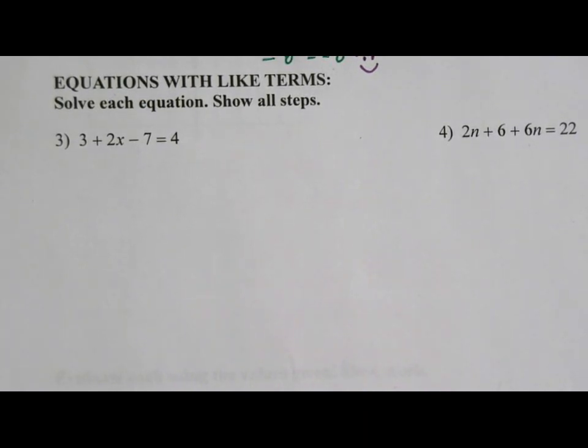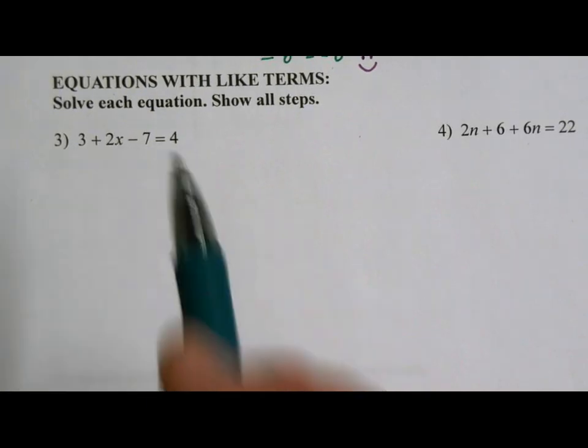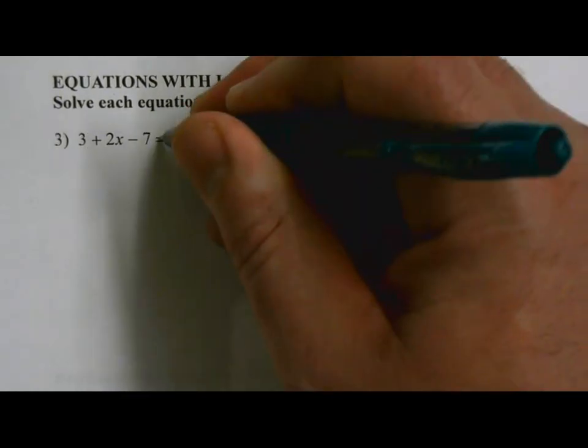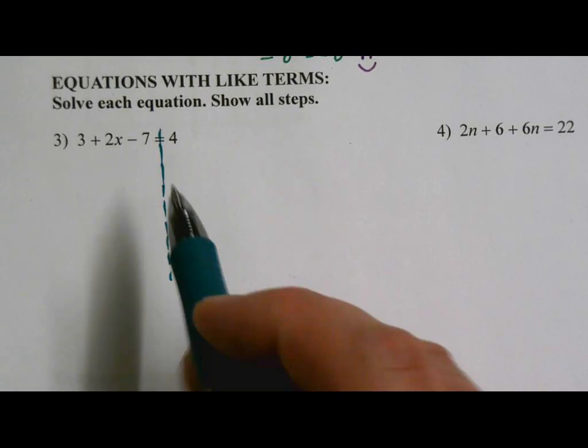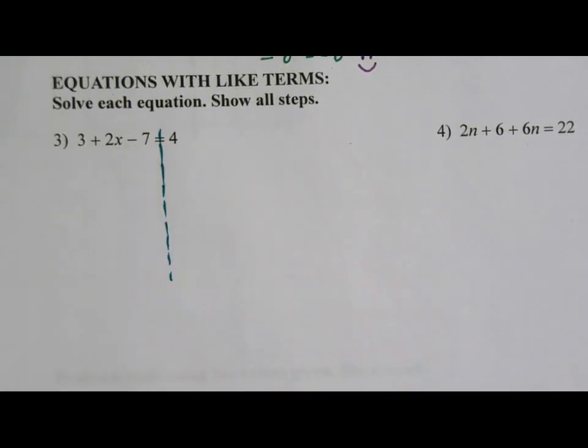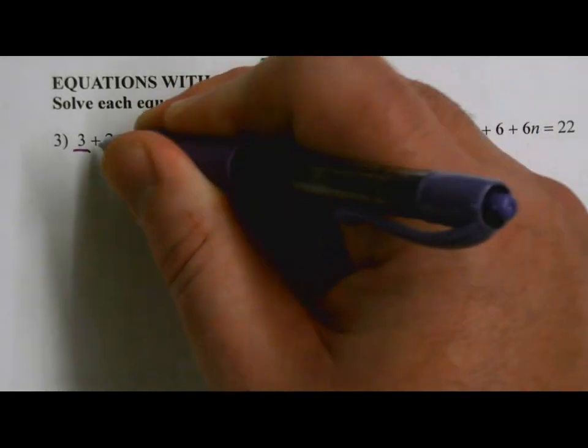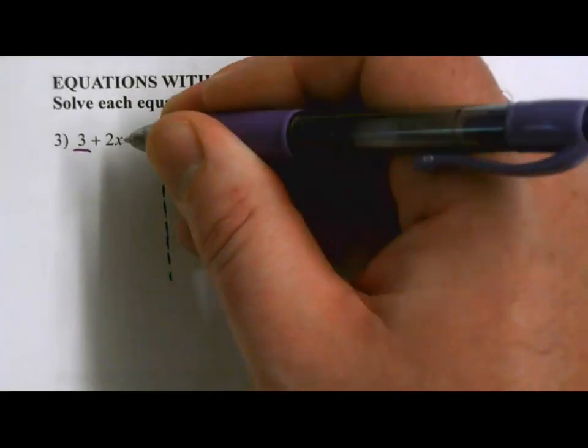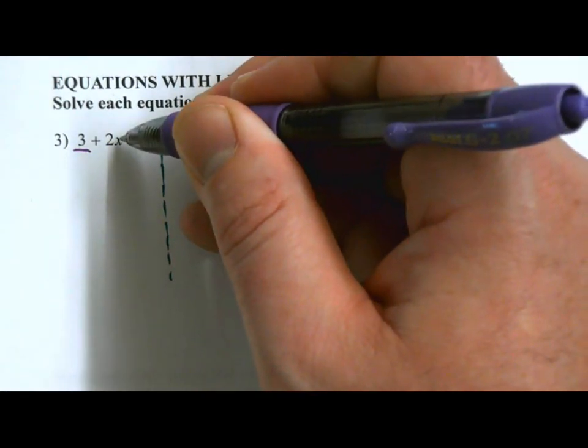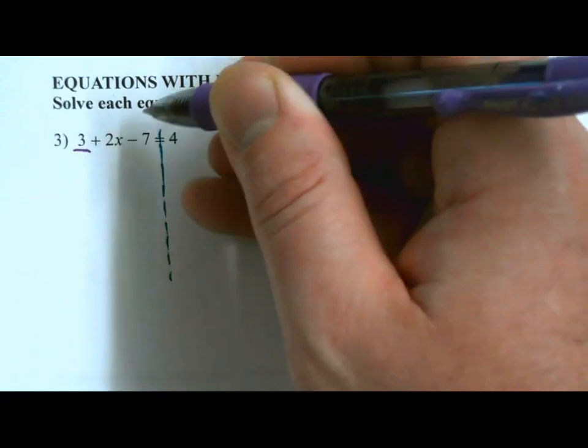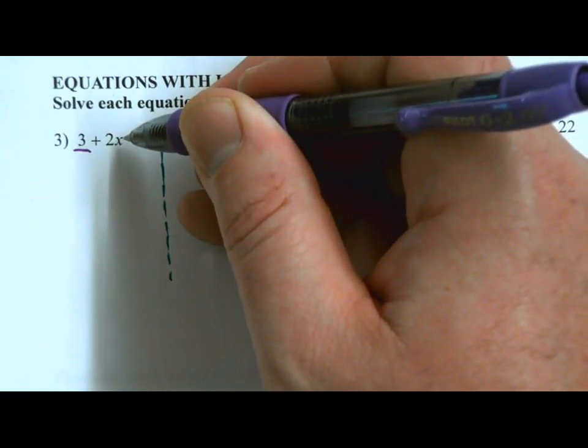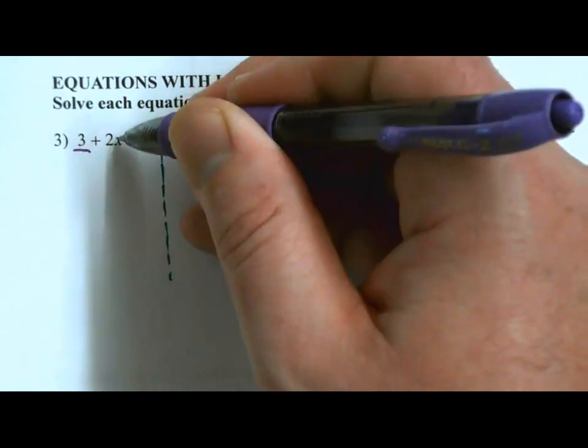So I want to get this x by itself. Before I get started though, I want to look for like terms that are on the same side of the equal sign. So let me draw my line so that I'm separating my two sides of the equation. On the left-hand side here, what I'm seeing is I have a 3 and a 2x. Now, are those like terms, 3 and 2x? They are not. In order to be like terms, they both have to have the same variable, and this one does not have an x, or they both have to have no variable. So 3 and 2x are not like terms.